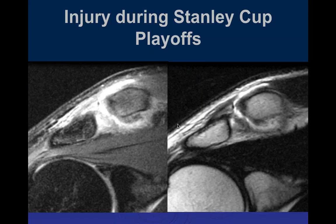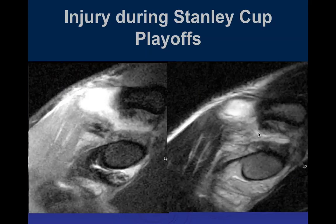Type 3 is ugly, and Types 4 and 5 are uglier. In this patient injured during Stanley Cup playoffs, a coronal fat-sat and T2 image shows mild separation of the AC joint with significant edema. The fluid extends above the superior aspect of the capsule, confirming AC separation. We'd like to evaluate the CC ligament as well.